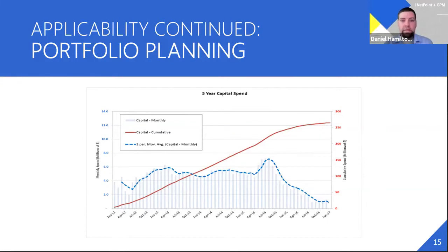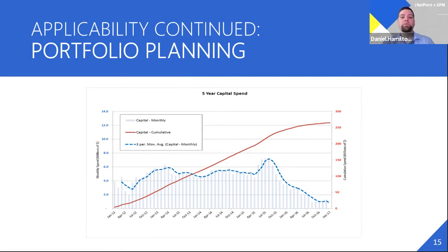One of many reports you can get out of portfolio planning can show cash flow and hours distributed over time. This really helps customers identify where they're spending their cash, dollars, or hours, and understand their resource requirements, since many customers don't have the resources to support all projects in their portfolio. This allows them to go back to the table and level their schedules and their overall portfolio.